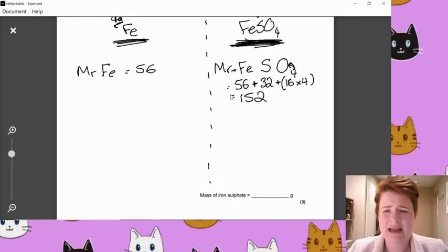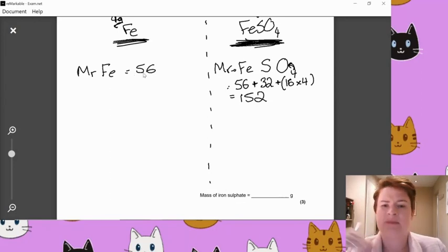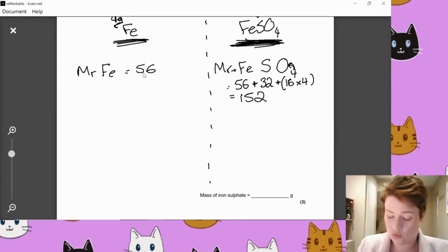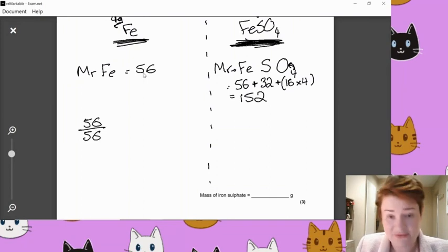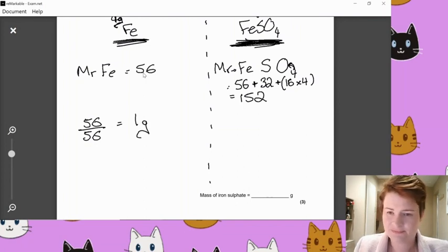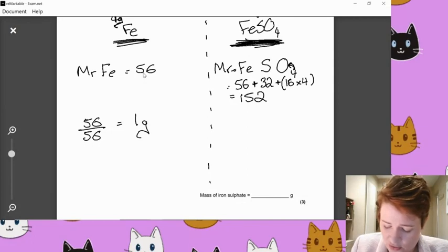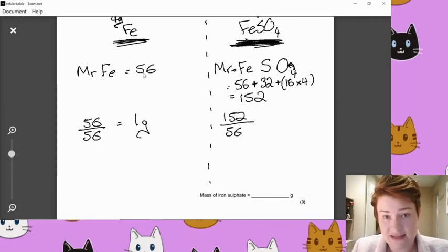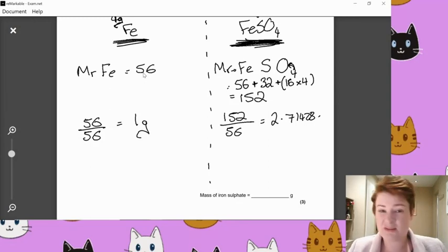So if I have 56 of iron, I'm going to get 152 of the iron sulfate. The question actually asked about four grams of iron. So what I need to do is I need to get this left hand side equaling four. Easiest way to do that is to get it down to one and then times it back up again to four. So to get 56 to equal one, I'm going to do 56 divided by 56 equals one. The units were grams, so I'm just going to leave that as grams as well. Whatever I do to one side, I have to do to the other.